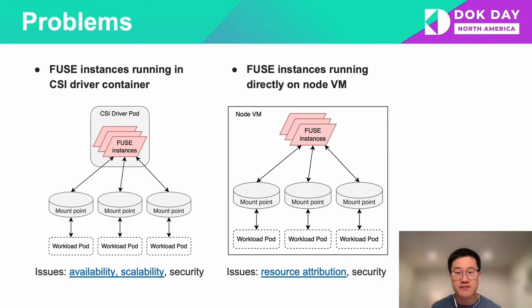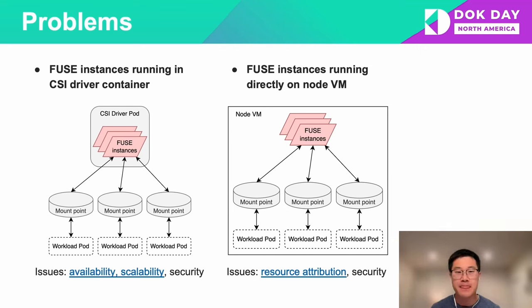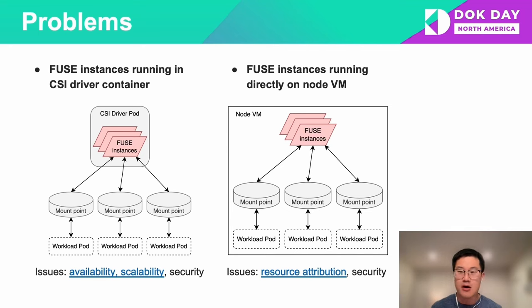Running the FUSE drivers directly on VM nodes could be a viable solution to address the availability and scalability issues. However, because FUSE drivers can consume significant resources on VMs, it can be difficult to manage and report the allocatable resources on the nodes if the resource consumption is not tracked by Kubernetes. Either way — running inside the CSI driver container or on the node VM — they usually use unified authentication for all FUSE mount points. However, it is more ideal to use workload-specific credentials to access the FUSE volumes.